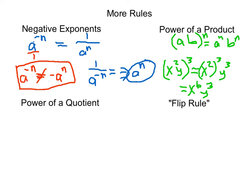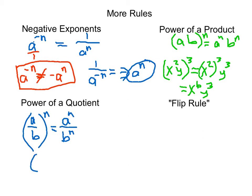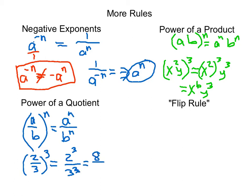The same thing can be done with the power of a quotient. If we have a over b — a fraction — and that whole thing is raised to a power, we can distribute that exponent to both terms, just like with the power of a product. For example, if you had two-thirds raised to the third power, we distribute that exponent of 3 to both terms: the numerator becomes 2 cubed which is 8, and the denominator becomes 3 cubed which is 27, giving us 8 over 27.